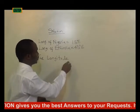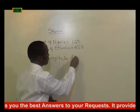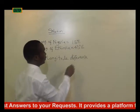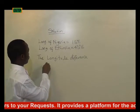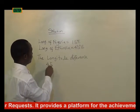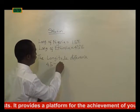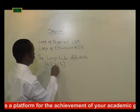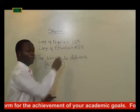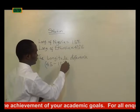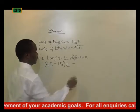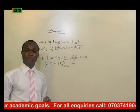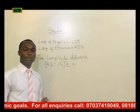The next step is to calculate the longitude difference. The longitude difference would be 45 minus 15 — since both are in degrees east — which gives us 30 degrees.